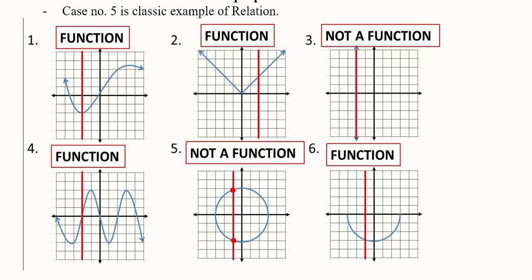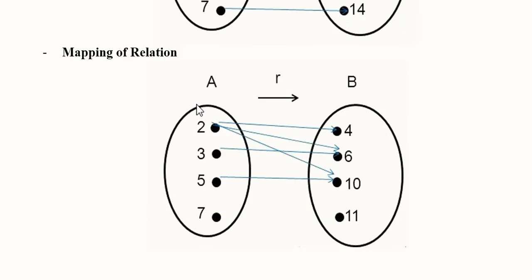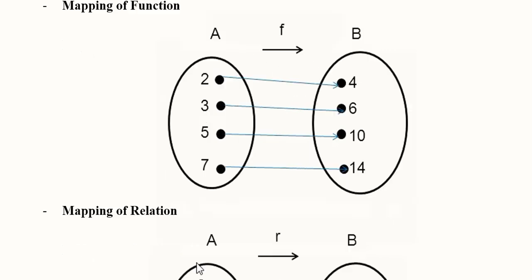Simply put, if there are multiple contact points with the vertical line, we are talking about a relation. When we map a function, we have one value of the range for each value of the independent variable: 2 leads to 4, 3 leads to 6, 5 leads to 10, and 7 leads to 14. For one value of the domain we have one value of the range. A relation is represented with R, whereas a function is represented by f.